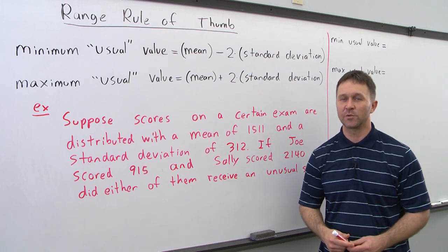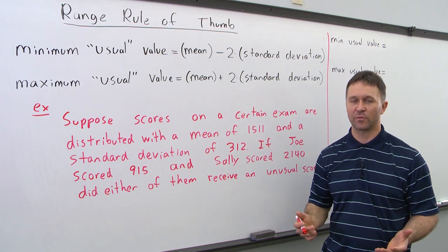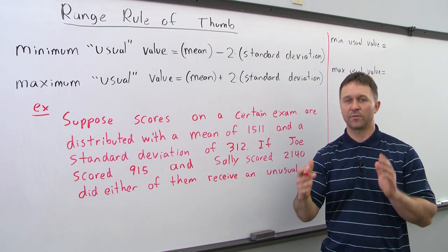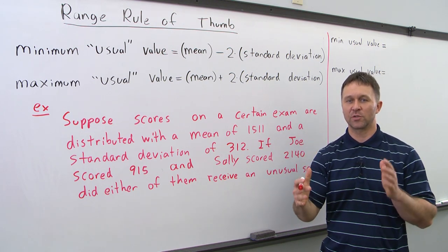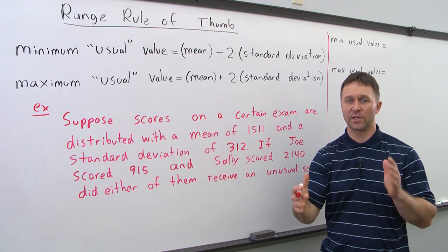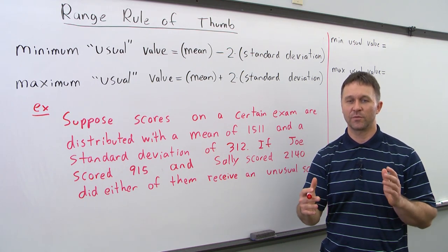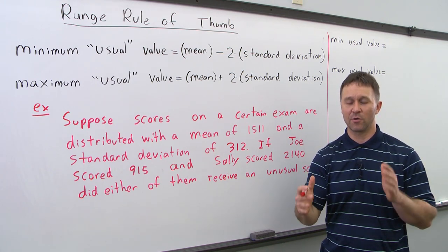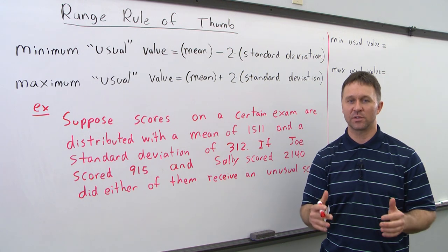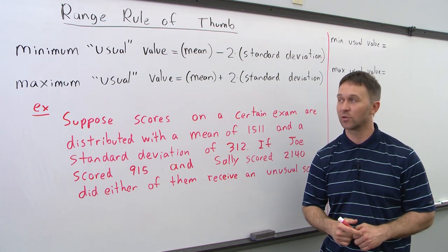What we're going to do is find the maximum usual value and the minimum usual value. If either Joe or Sally scored between those then they're usual. If Joe or Sally scored outside of those values then they received an unusual score.